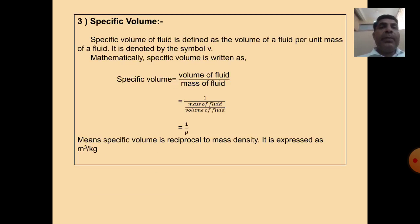The next property is specific volume. Specific volume of a fluid is defined as the volume of fluid per unit mass of fluid. It is generally denoted by small v, and it is the reciprocal of mass density. Therefore, its unit is meter cube per kg. Specific volume = volume of fluid / mass of fluid, which equals 1/rho.